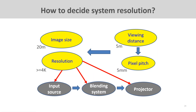After comparing different options for building a large-scale projection system, it's important to decide the resolution. This drives critical decisions about the quantity and specs of projectors and input sources. Picture quality is perceived according to watching distance and pixel pitch — the closer the watching distance, the smaller the pixel pitch must be. Pixel pitch is calculated by dividing the image size by the resolution. For example, if watching distance is 5 meters and image width is 20 meters, a 5mm pixel pitch requires at least 4K system resolution.